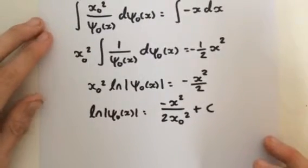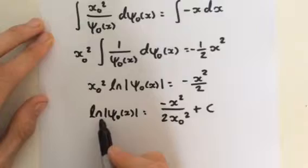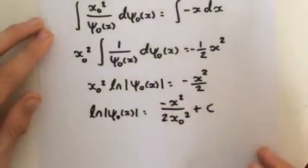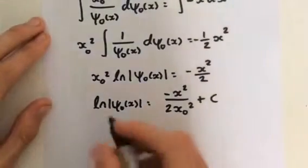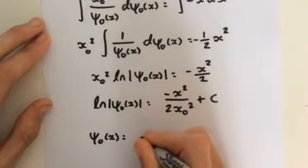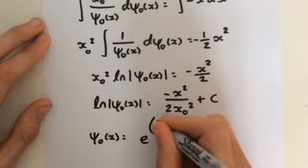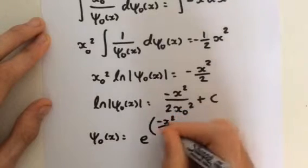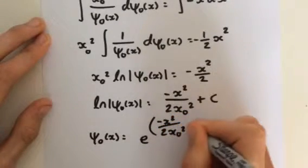And so we can undo this natural log by raising it to the power of the base, in this case the exponential e. So therefore we finally get psi_0(x) is equal to e to the power of negative x squared divided by 2 x_0 squared plus c.